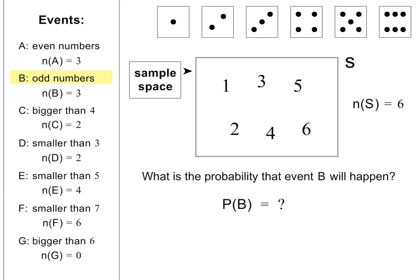Let's calculate the probability of getting an odd number when rolling a die. The formula tells us that we need to divide N(B) by N(S). N(B) equals 3 and N(S) equals 6. The probability of event B happening is again 3 out of 6, or 1 half.